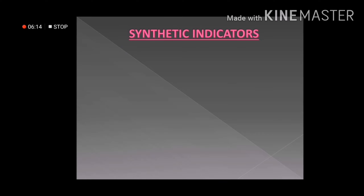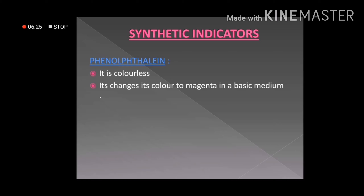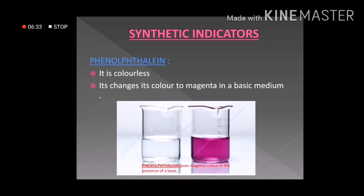Let us now discuss some synthetic indicators. Phenolphthalein is a synthetic indicator which is colorless, but it changes its color to magenta when it reacts with a base. The figure shown helps us understand this color change.